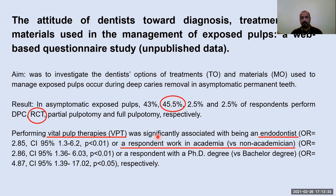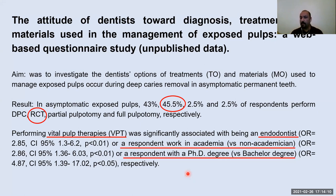The odds ratio refers to the chances of choosing vital pulp therapy over root canal treatment. Being an endodontist gives an odds ratio of 2.8 to choose vital pulp therapy. Respondents working in academia and those with a PhD degree also showed higher odds. Knowledge about pulp pathology and histopathology is needed, and many dentists don't have it — they stick to the mechanical idea of treating teeth.